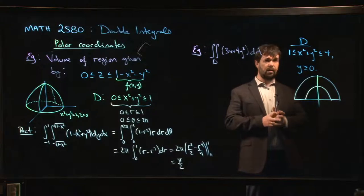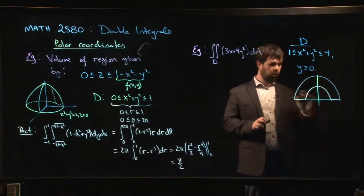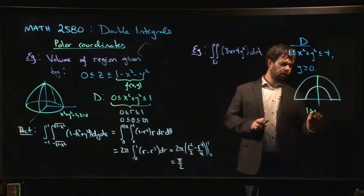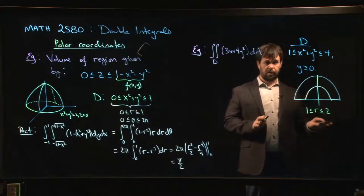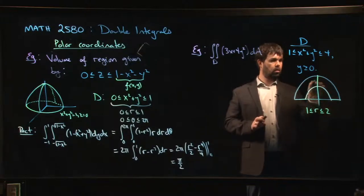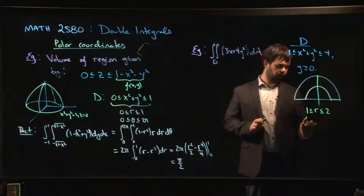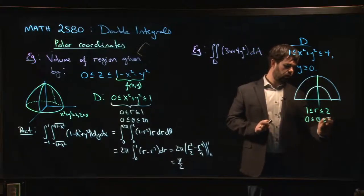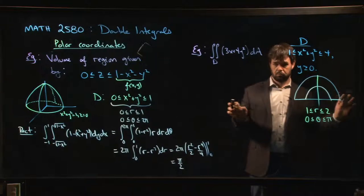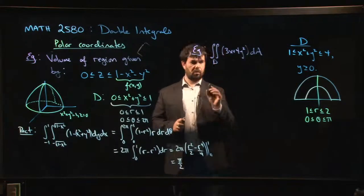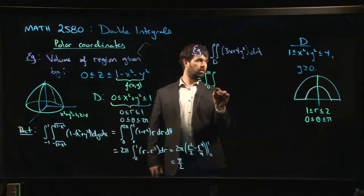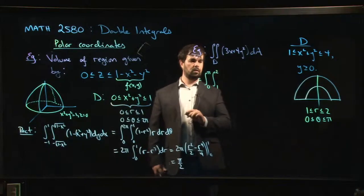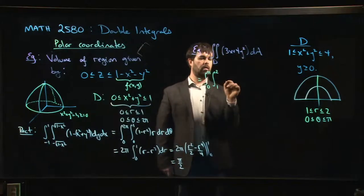And again, this is an easy region to describe in polar coordinates. Because in polar coordinates, this is just saying that r goes, so the radius of the smaller circle is 1, the radius of the bigger circle is 2. Theta goes from 0. Well, we don't go all the way around. We only go halfway around. So theta goes from 0 to π. So if I'm doing this in polar coordinates, I have something that looks like this. Integral from 0 to π, integral from 1 to 2.